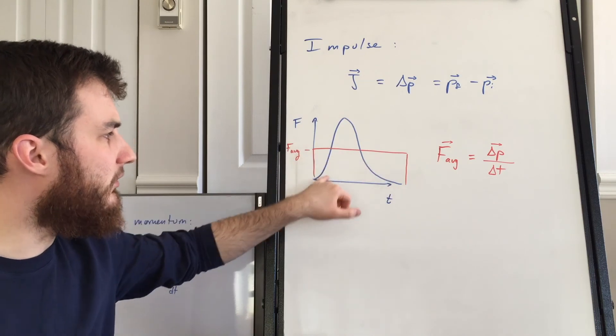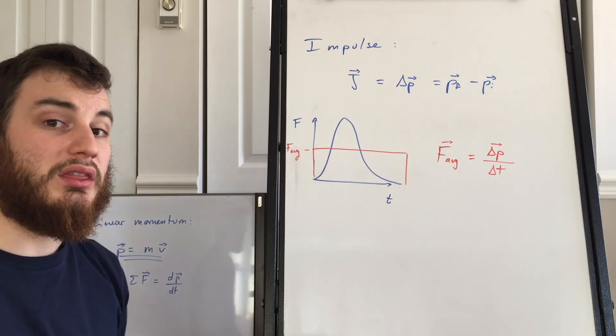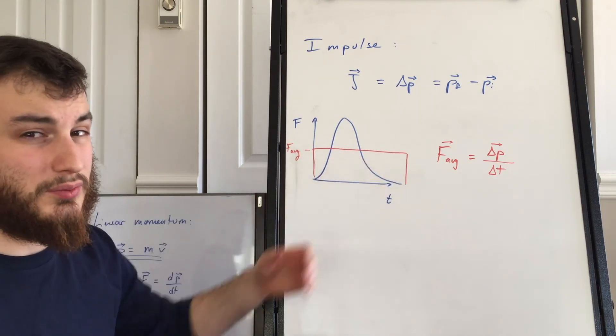We can't really find what the blue curve is, but we can certainly find what the red thing is. It's just the area of this rectangle.